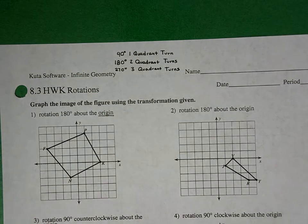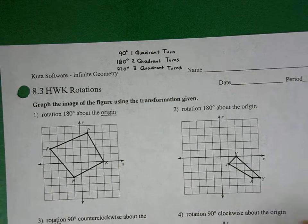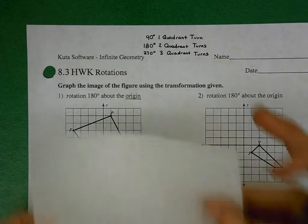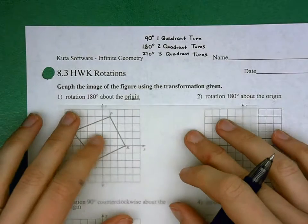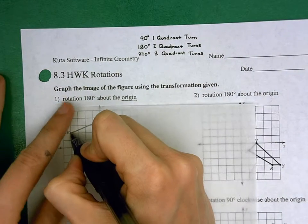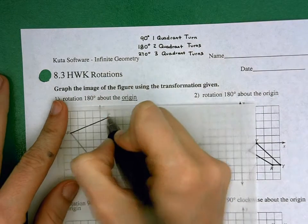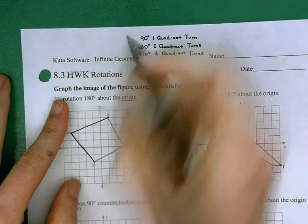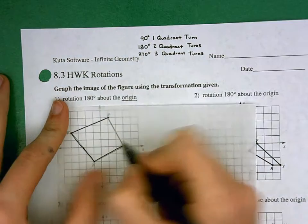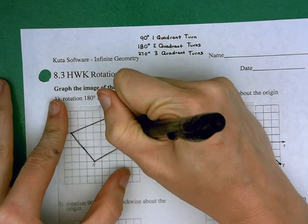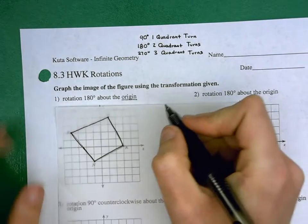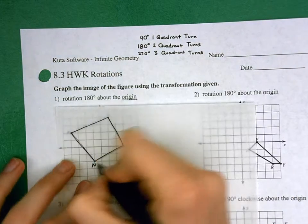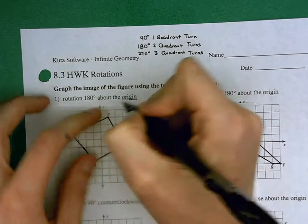So in number one here, I'm told to rotate 180 degrees about the origin. So I'm going to go ahead and take my patty paper. I'm going to line this up, and I'm going to sketch in my shape. And again, I'm going to label my points just like I did with the reflections so that when I'm done with the rotation, it's easy for me to label my primes.